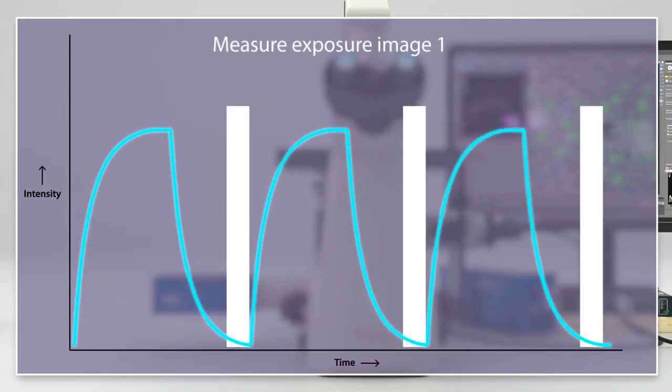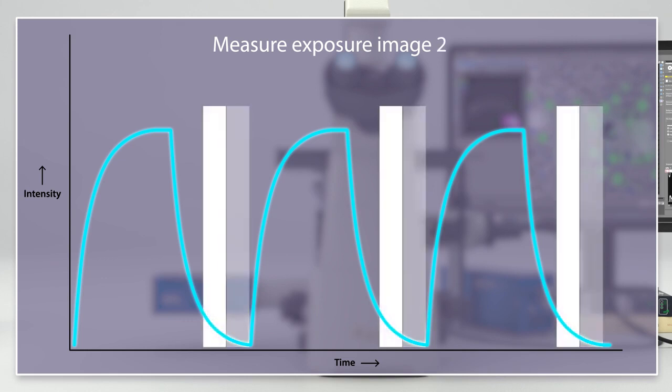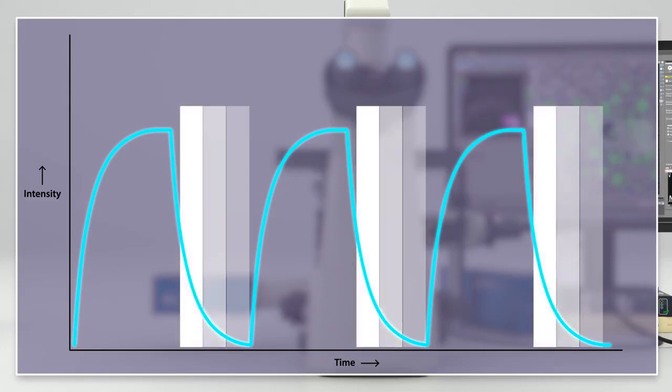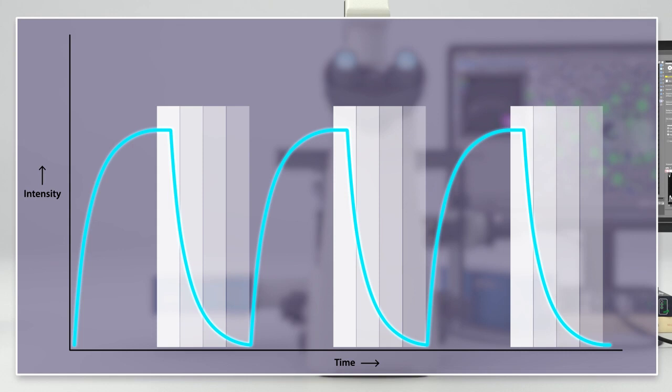Repeatedly integrating over the same narrow section of the decay curves leads to the first image. Then, the integration interval is slightly shifted to integrate over another section of the decay curves, giving the second image. This section-wise integration is repeated until the whole decay curve is sampled.